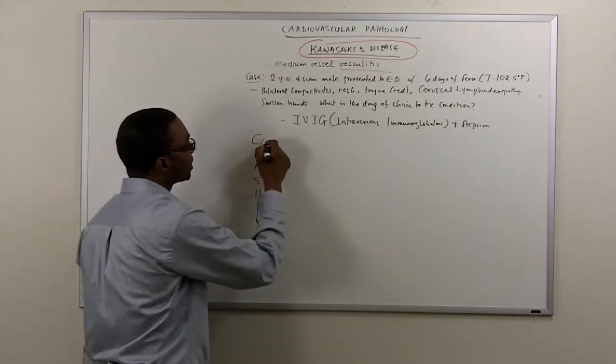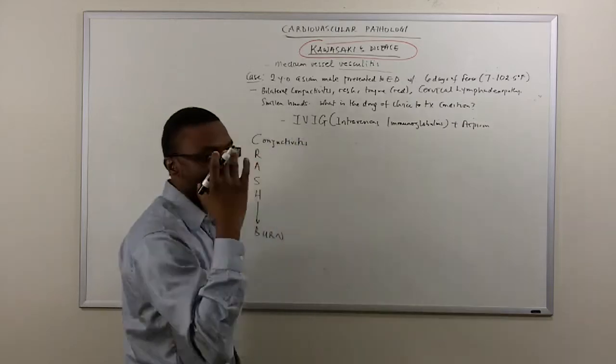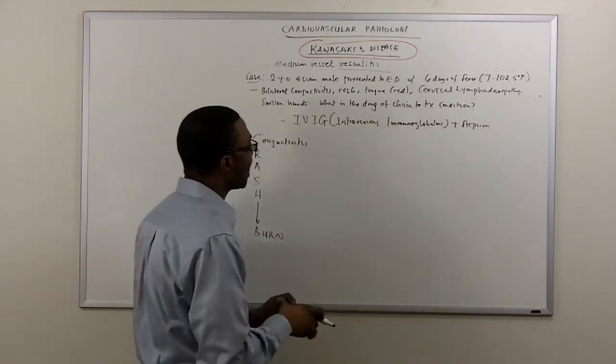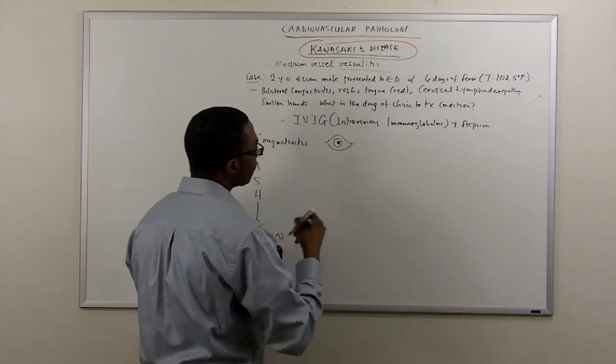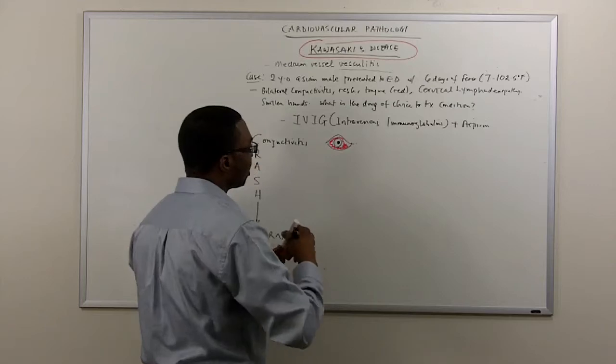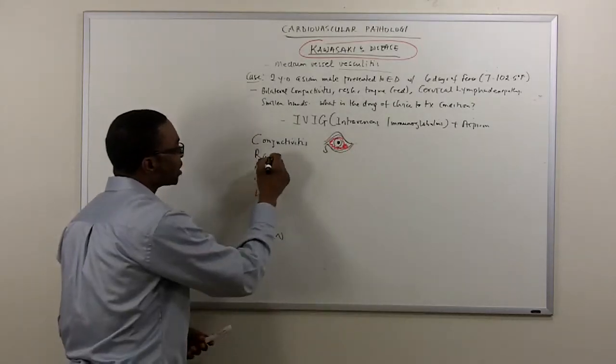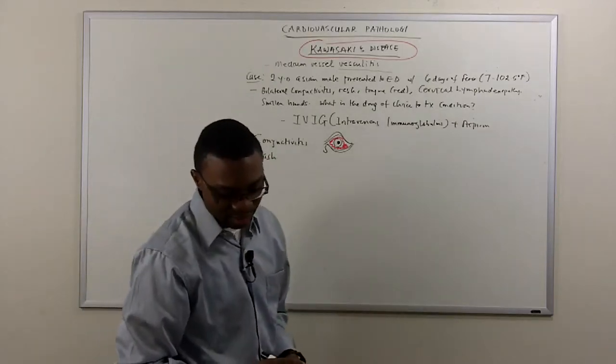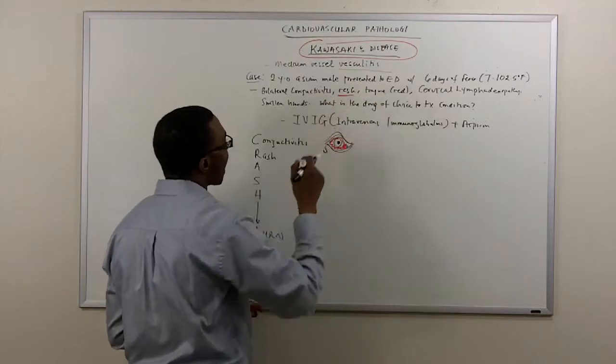You must remember this mnemonic. The first word says the kid had conjunctivitis. The eyes are very inflamed. So if you take a look at the eye, you see it's very red. That is conjunctivitis. And then they have a rash all over their body.